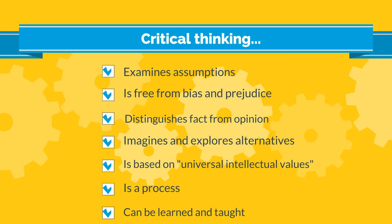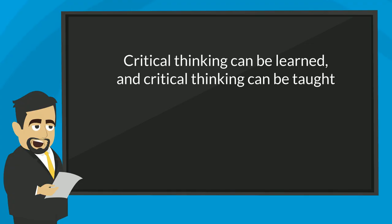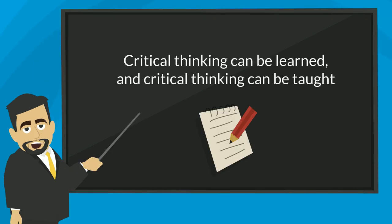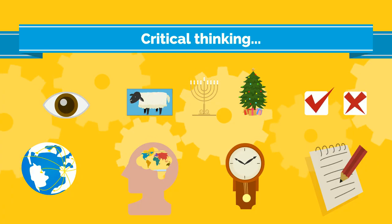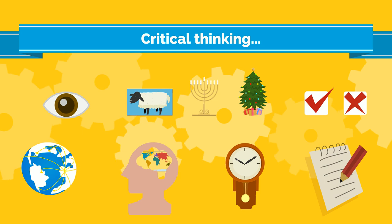7. Critical thinking can be learned and critical thinking can be taught. In part, because critical thinking is a process, critical thinking is a skill that improves with practice. 8. Critical thinking can be described and broken down into steps, and this is how critical thinking can be taught. Specific techniques that are used to teach critical thinking include discussion, problem-based tasks, and the use of small groups.